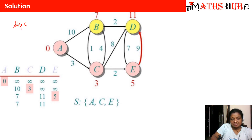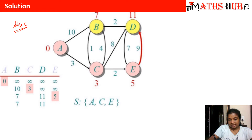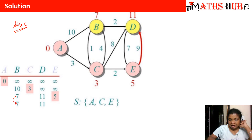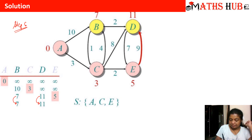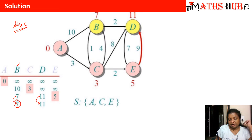In step number six: can we improve B further? One way is A to B directly with distance 10; the second way is A to C then C to B with distance 7. There is no other route, so the distance 7 remains 7. For D, there is only one route so far: 3 plus 8 equals 11, which is also not improved. Out of 7 and 11, the minimum is 7, so we select vertex B. Vertex B will now be added to the source set S.